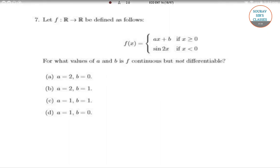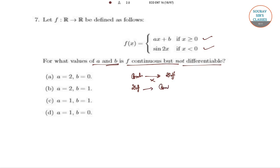Now f(x) equals ax plus b where x is positive, and sin 2x where x is negative. For what values of a and b is f continuous but not differentiable? Here, one important thing about the theorem: if a function is continuous, it may or may not be differentiable. But a differentiable function has to be continuous.